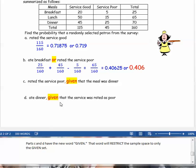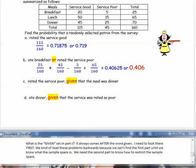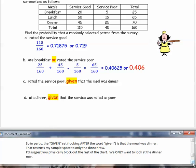What is the given set in part c? It always comes after the word given. I need to look there first. We kind of read these problems backwards because we can't find the first part until we know what the sample space is, and we need the second part to know how to restrict the sample space. So in part c, the given set looking after the word given is that the meal was dinner.